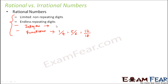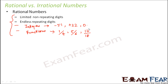Similarly, when you talk about integers, they could be −51, +22, or 0, and all of these are again rational numbers. When you look at 0, it is nothing but 0/1, which is in the form of p/q where p and q are integers and q is not equal to 0. So these are all rational numbers.